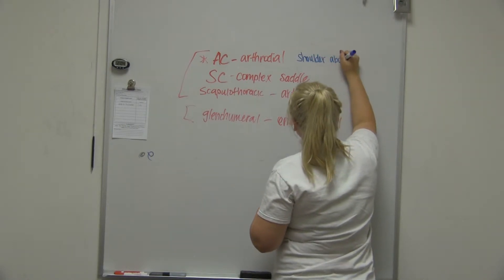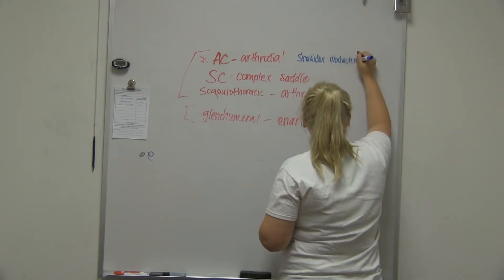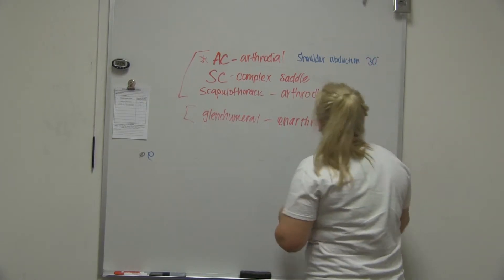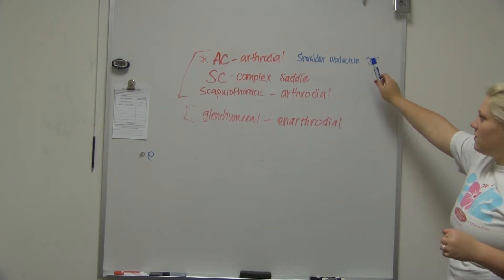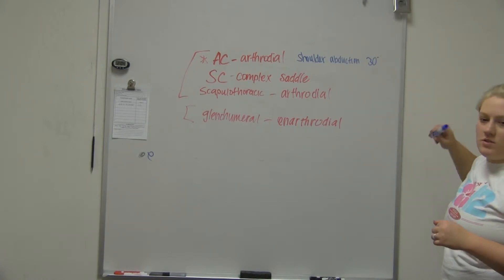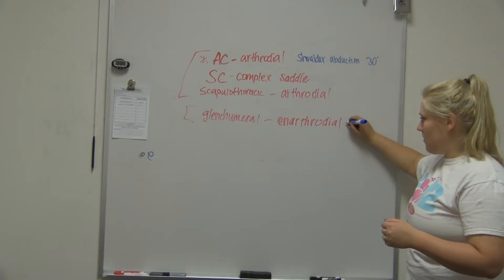So, shoulder abduction to 30 degrees. Shoulder. Is the closed pack position for the AC joint. So in that position the AC joint is most congruent. About for this joint.